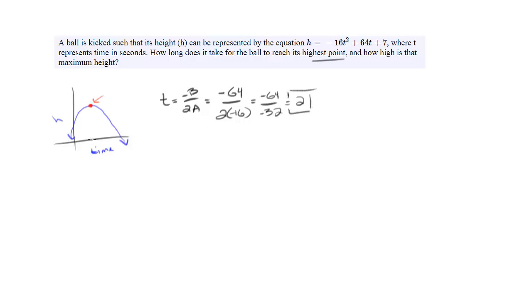So this gives us the time value or the input value of the height of the ball. So it tells us when it happens. In this case, time was seconds, so it's after 2 seconds. To find the actual height, well, we just got to plug in 2 to the original function and evaluate it.